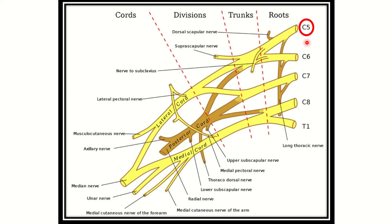Here we can see the roots. They are cervical 5, cervical 6, cervical 7, cervical 8, and thoracic 1. So there are five roots of the brachial plexus. Among them, the first one is cervical 5 and the last one is thoracic 1.